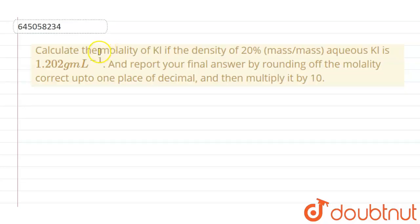Hello students, the question is calculate the molality of KI if the density of 20% mass by mass aqueous KI is 1.202 gram per liter. And report your final answer by rounding off the molality correct up to one place of decimal and then multiply it by 10.